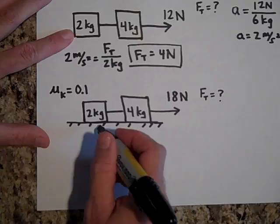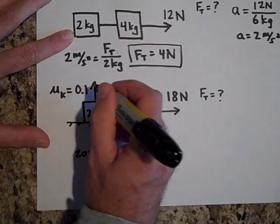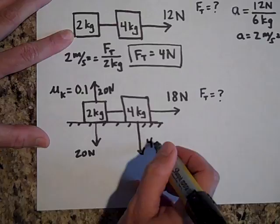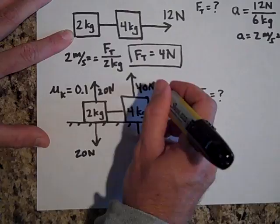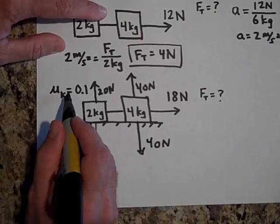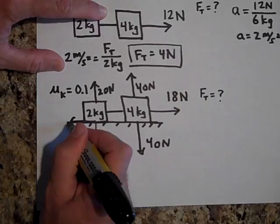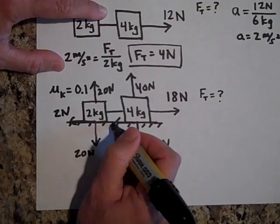There's 20 newtons down on the 2 kg block, so the normal force is 20 newtons up. And 40 newtons down on the 4 kg block, so the normal force is 40 newtons up. The frictional force is μk times the normal force: 0.1 × 20 = 2 newtons on the 2 kg block, and 4 newtons on the 4 kg block.